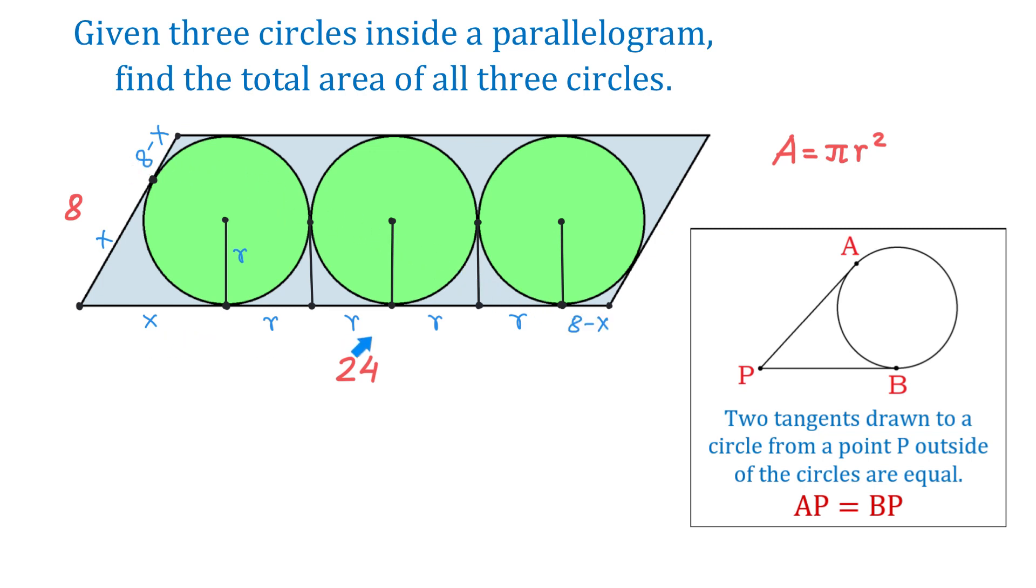If we add all these variables together, we will get 24. So, if we add x and 4r and 8 minus x, then we will get 24.